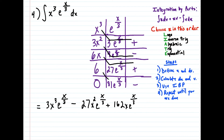And then for the last one, we have 6 times 81e^(x/3). And when we multiply those two, we're going to get minus 486 e^(x/3). The reason why it's a minus here is because there's a minus in this row — so this was once positive 486 e^(x/3), but that minus tells us to change the sign. And now we just throw on our plus c.